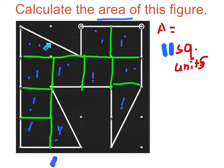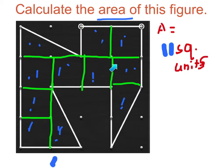This is a rectangle and this is the square. If there is a square that's half, it's going to be a half because the square is equal to one unit. So, this is the unit.